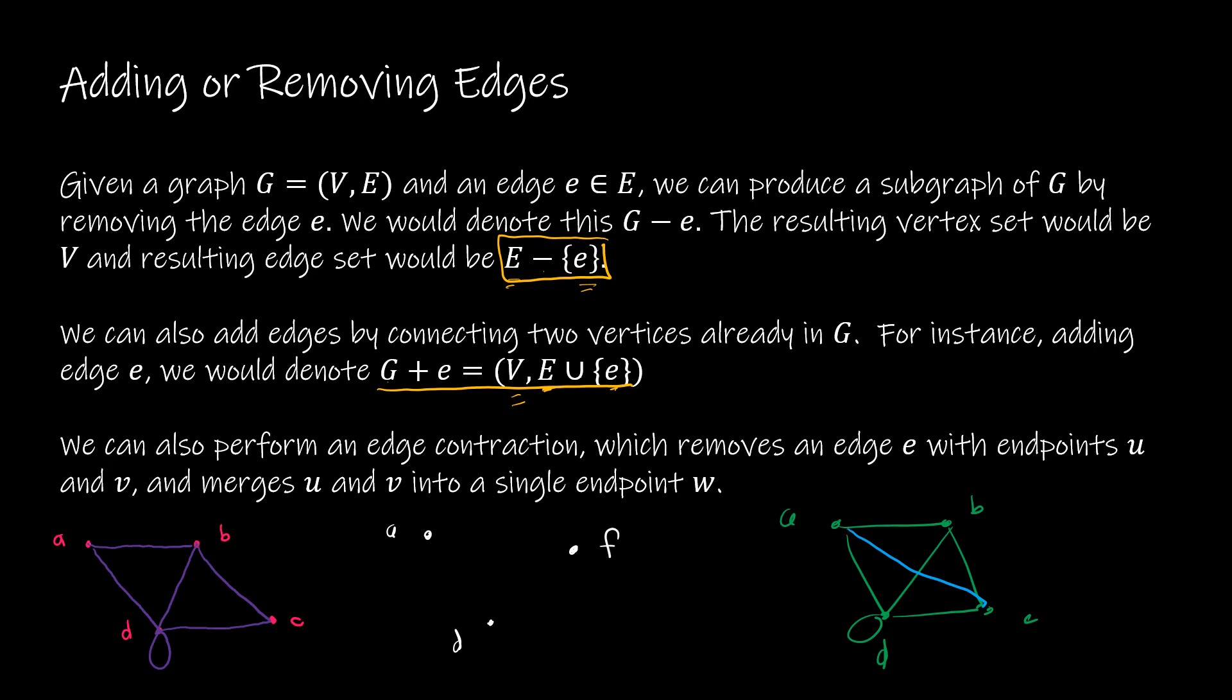So A was originally connected to B. Well, it's now connected to that new endpoint. A was connected to D. D was connected to itself. D was connected to B, which is now F, and D was connected to C, which is now F, so I don't have to draw another edge. This is my contraction, where I've contracted B and C into just one point.